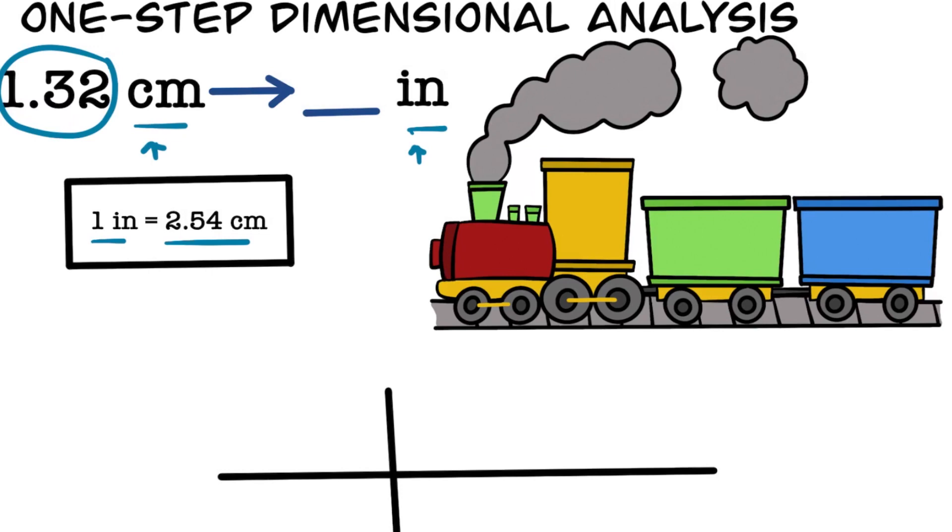Fourth, we draw out our train tracks. Next we start filling out the units that go into each box. There's a special rule in dimensional analysis that I like to call the diagonal rule. If a unit has previously been on the top, it will next be on the bottom diagonal from where it was originally in order to cancel out.